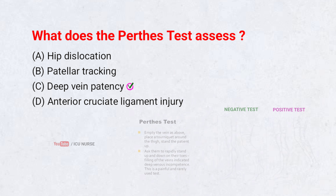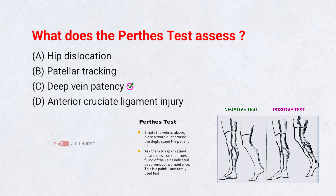Deep vein patency. The Perthes test is used to check whether the deep veins are open and functioning when the superficial veins are compressed. During the test, a tourniquet is applied and the patient is asked to walk. If the veins open, it indicates good deep venous flow, helping differentiate causes of varicose veins.